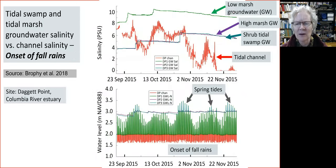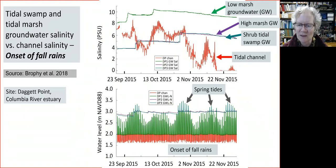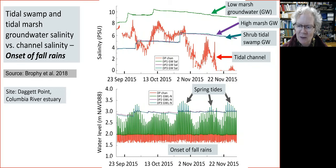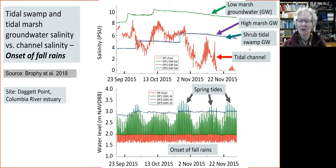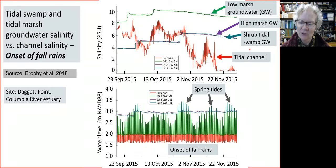These are the same graphs but for the fall, during the transition from our summer dry season to our winter wet season here in the northwest. The fall rains began at the end of October, causing tidal channel salinities to drop suddenly. But the low marsh salinities remained high throughout this transition to the wet season, and the same was true for the high marsh and shrub tidal swamp — they didn't drop immediately with the fall rains. Clearly, groundwater salinity is somewhat uncoupled from channel salinity.